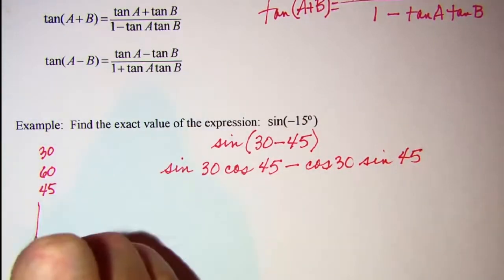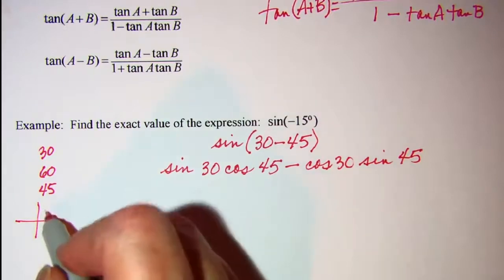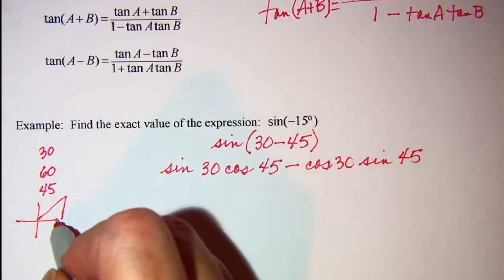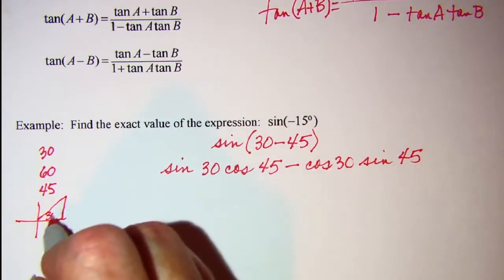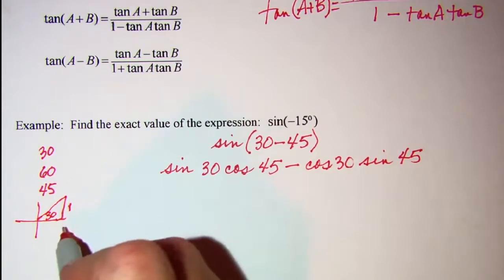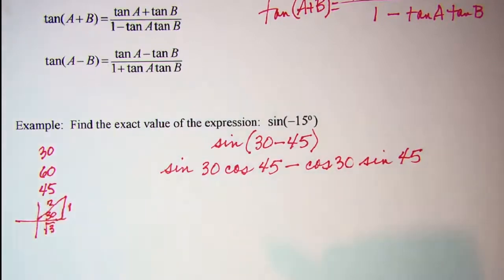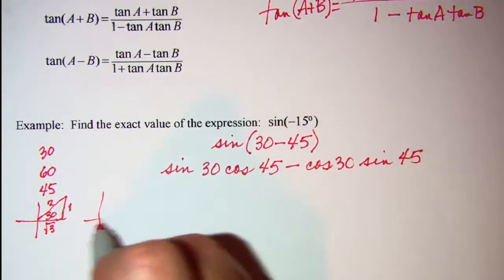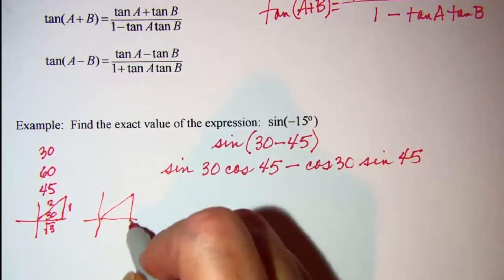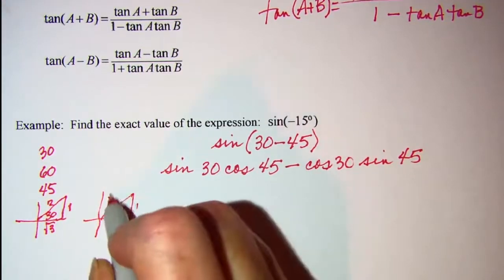We need a reference triangle for 30. And that would be a 1 across from the 30, a root 3 on the adjacent side and 2 on the hypotenuse. And then we need a reference triangle for the 45. That's 1, 1, root 2.